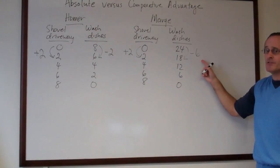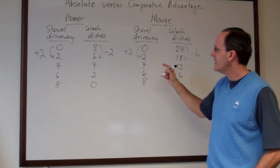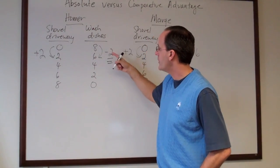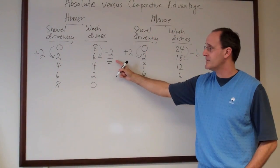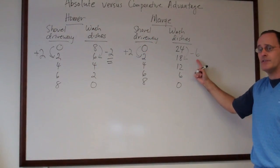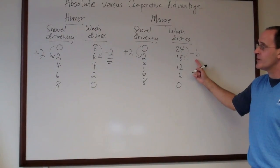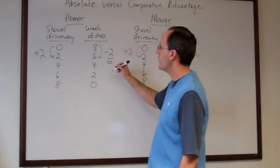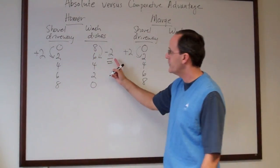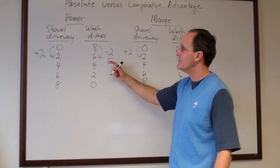This is where the notion of opportunity cost comes in. Since Homer only gives up washing the dishes twice, and Marge would give up washing the dishes six times, Homer is the low opportunity cost producer in this case. And we want Homer to shovel the driveway because he gives up the fewest dishes.